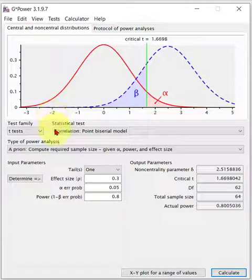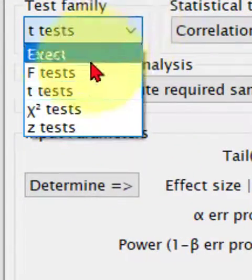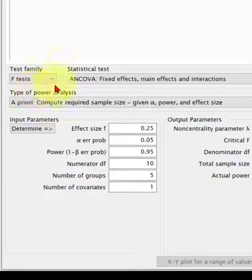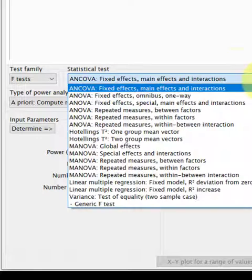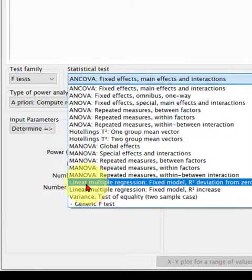Believe it or not, regressions are under F-tests. So we go here and down at the bottom, linear multiple regression fixed model R-squared deviation from zero. That is what we use for all multiple regressions. We're going to go ahead and use that.